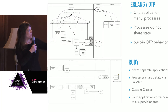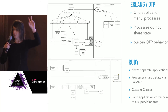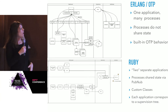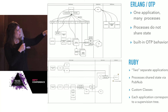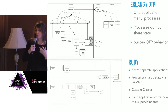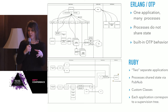Looking at the two approaches side by side: in Erlang OTP, there is one application with many processes. They don't share state, and you have built-in OTP behaviors. In Ruby I had two separate applications — and in quotes, because if I wanted another, it would have been three or four. The processes shared state, and I ended up writing a lot of custom classes. There's very much a culture of 'programming by wishfulness' in Ruby — you just sort of write what you want it to do, which is great. But it's very different from being in OTP and thinking, well, how do I fit this into a gen server?